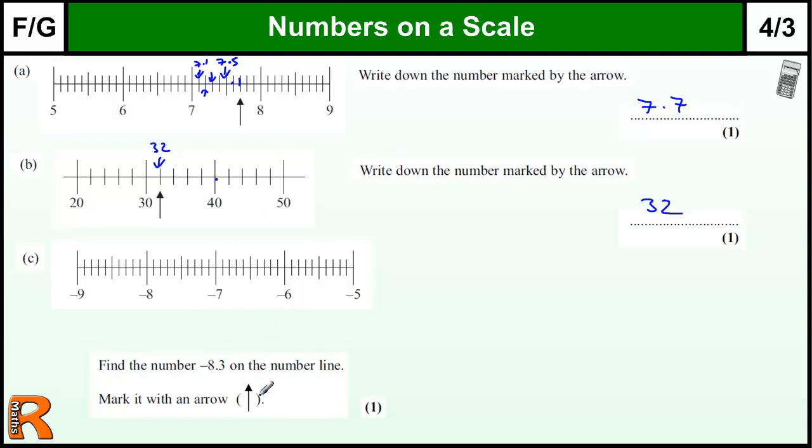Okay, now we've got to mark on a number with the arrow. So we're trying to mark on a number minus 8.3. So coming from this end, here we have 10 gaps between. So this is back to this earlier one, the 0.1s for each one.